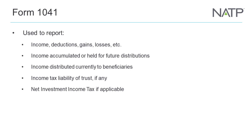Form 1041 is used to report all items of income, deduction, gain, loss, and essentially all transactions that took place during the trust tax year. It also records whether income is to be accumulated or held for future distributions to the beneficiaries, or whether income is to be currently distributed to the beneficiaries. It starts out as trust income, but if the trust document says income is to be distributed currently — within the same tax year — it becomes personal income on the beneficiaries' 1040.